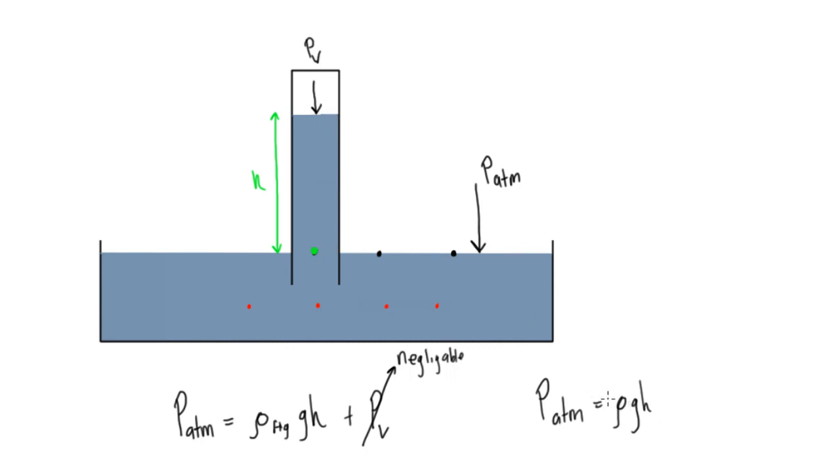So here we have this expression, P atmosphere equals ρgh, and now what the problem will usually be stated is, if you're given h, you can observe what h is or measure it with a ruler, then it'll say calculate what the atmospheric pressure is. Or, the other way that this problem usually gets asked is, given atmospheric pressure, what will the height in millimeters be for this column of mercury?